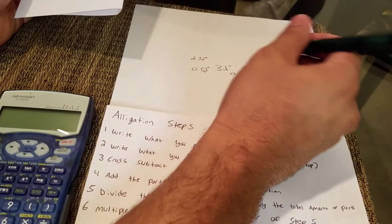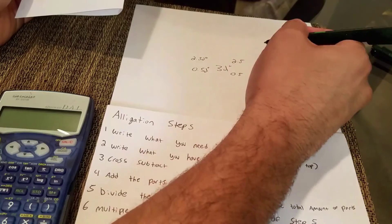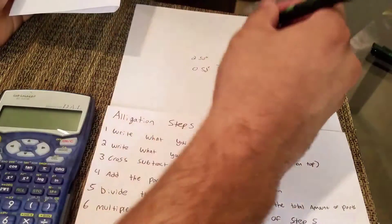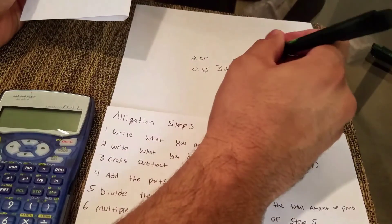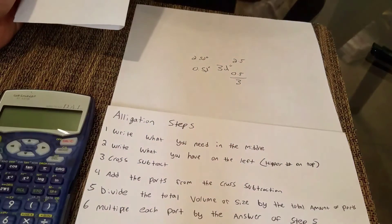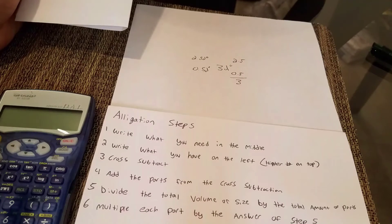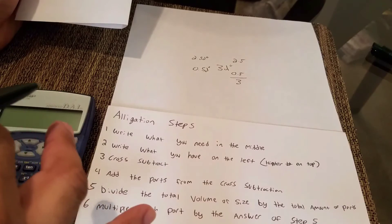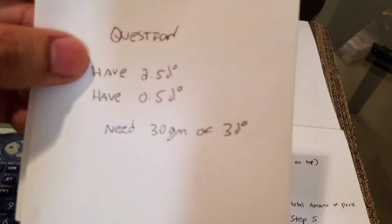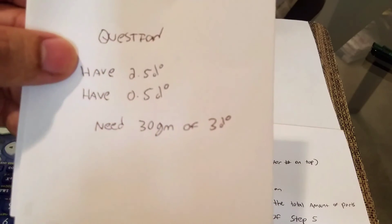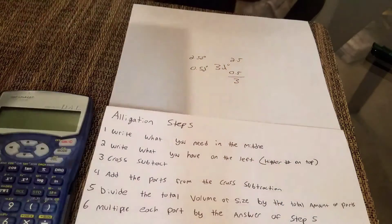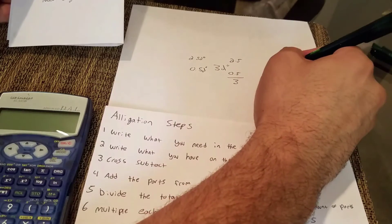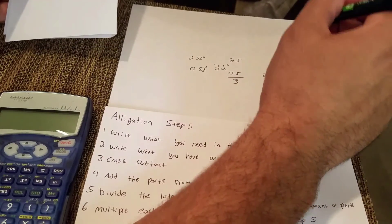3 minus 0.5 will put it to 2.5 here. And after that, the next step is add the parts from the cross subtraction. Because this is parts right here, so we're going to get 3 total parts. The next part is divide the total volume or size by the total amount of parts. So this time we're not working with a bag, we're working with cream. The size that we need is 30 grams, so we're going to take 30 divided by 3, and that's going to give us 10.